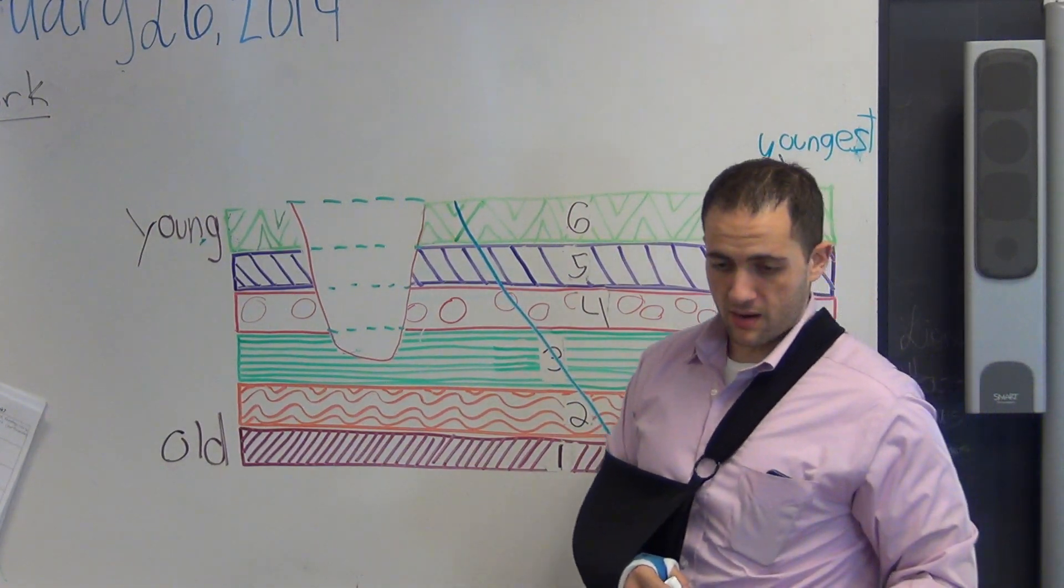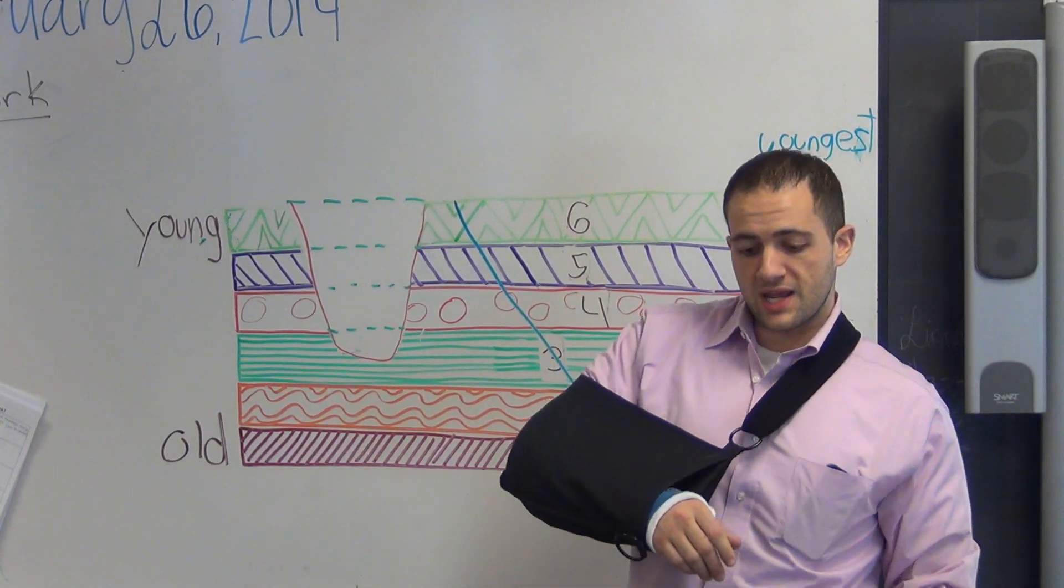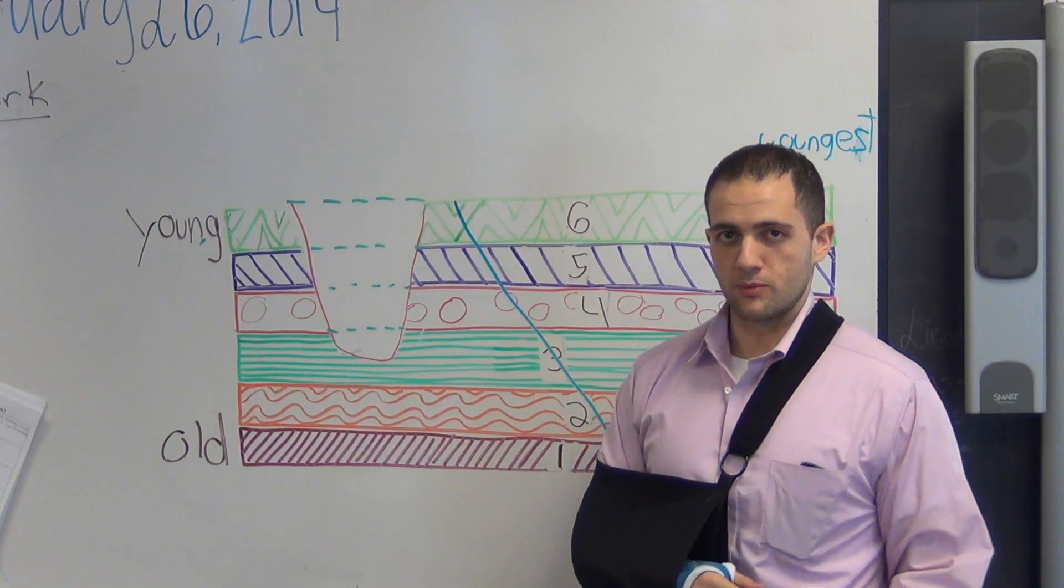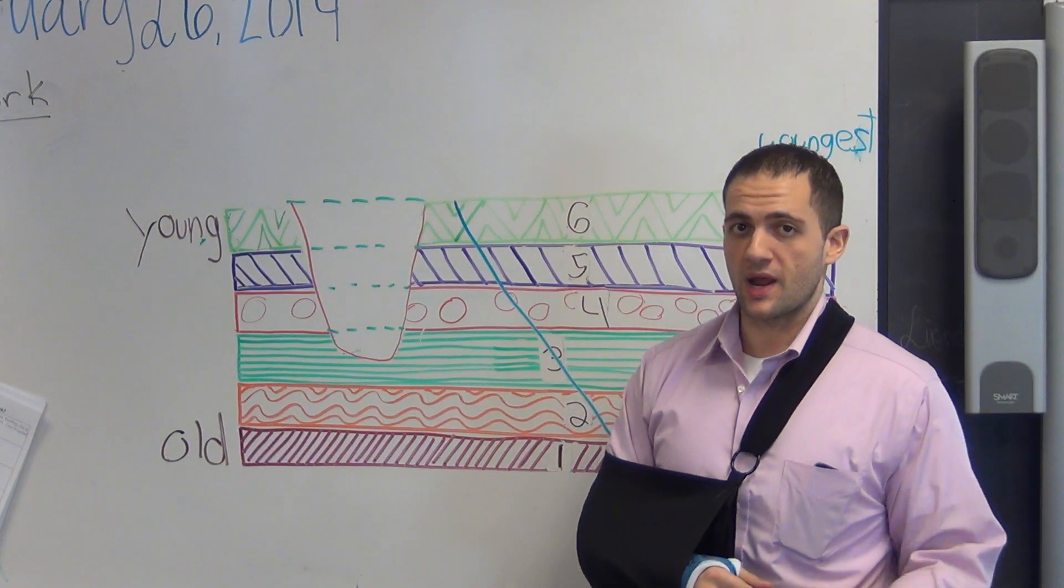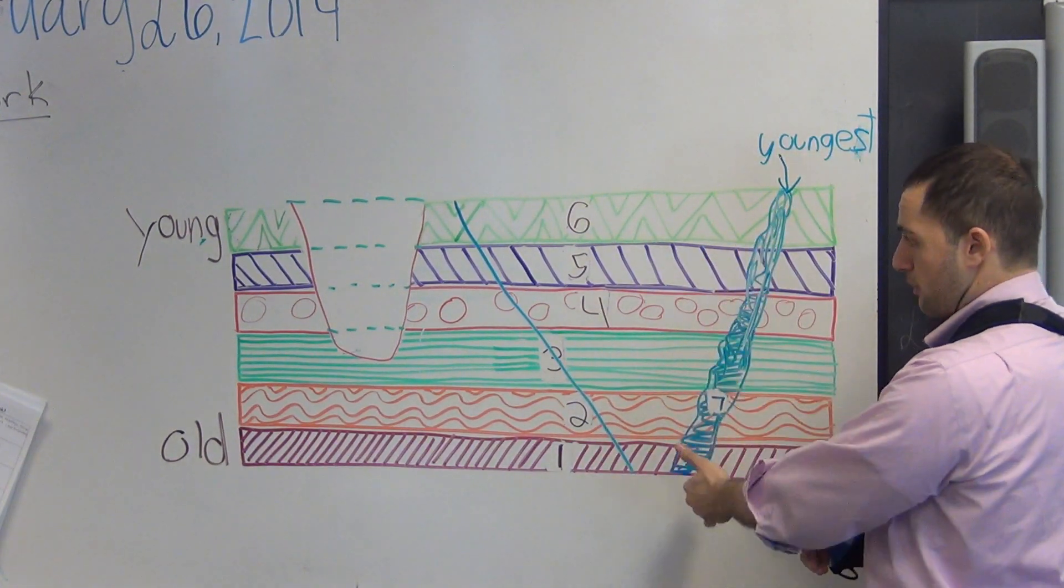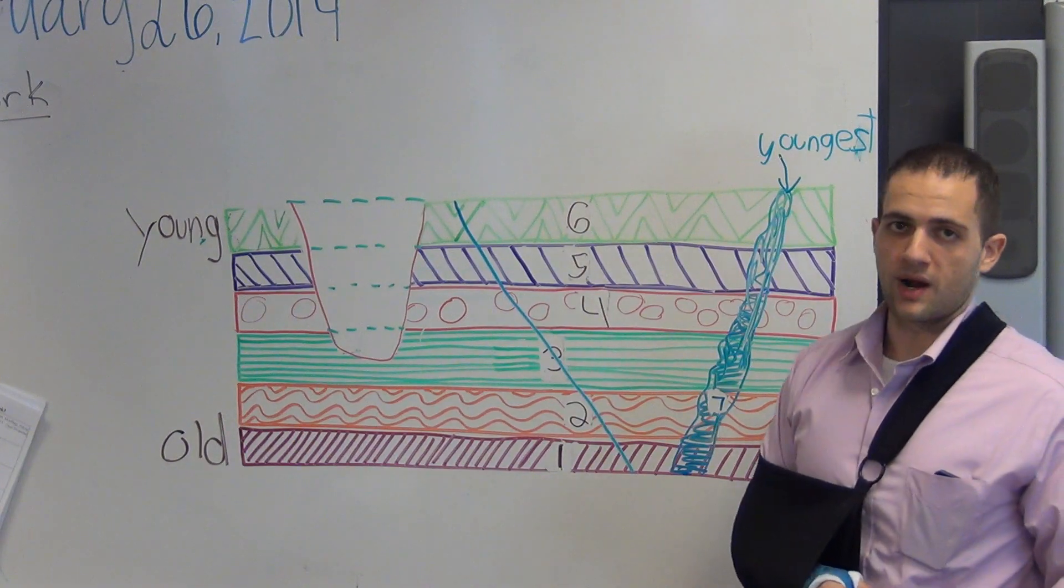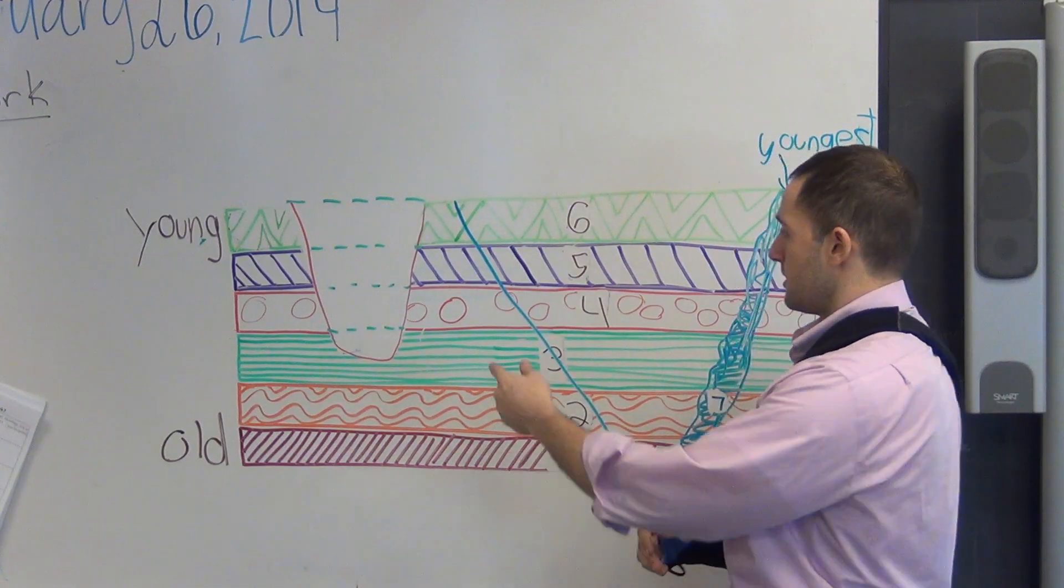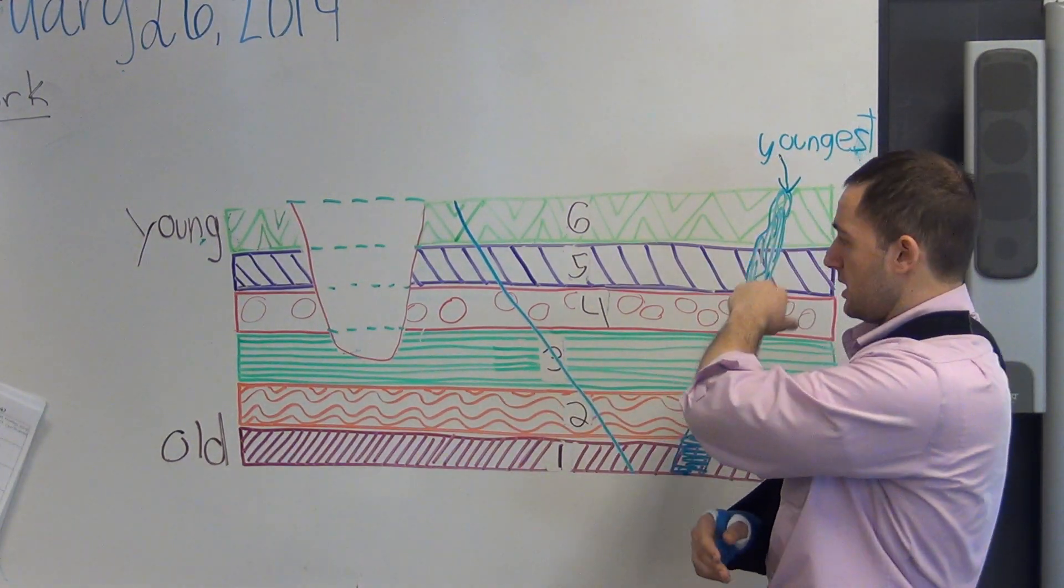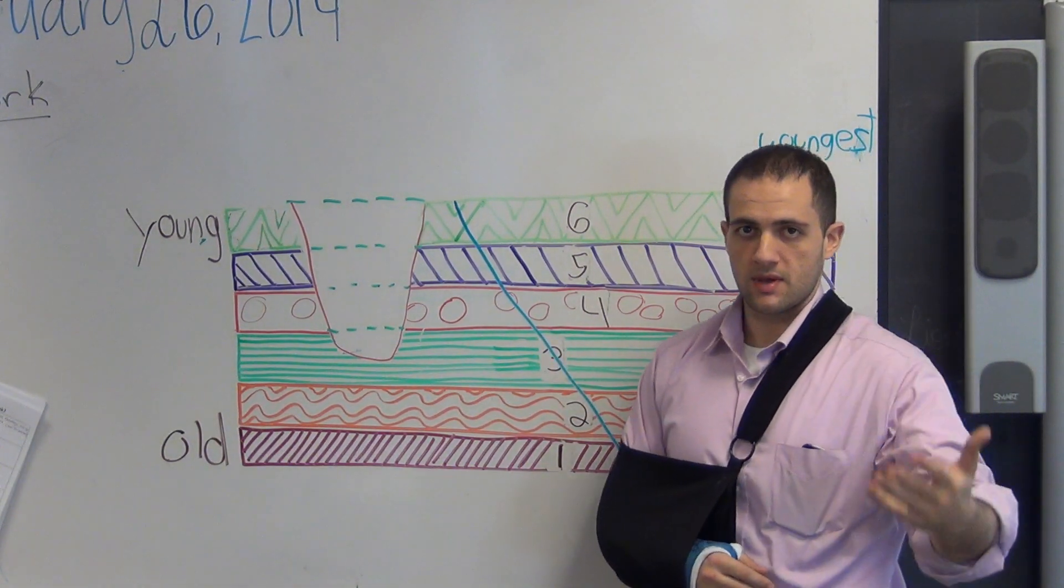A perfect example is my arm. The break in my arm came after my arm was created, which should make sense—can't break an arm if you don't have an arm. You can't break a rock if there was no rock there. So the rock was made first, my arm was made first. The breaks and the melting and the new rock came after.